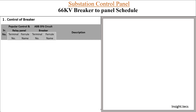Now let's get started preparing the schedule. We will make a simple table where we write the terminal numbers and ferrule names from the drawings of the relay control relay panel. Similarly, we'll write terminal numbers and ferrule names for the circuit breaker. Today we are using the relay panel of a popular make, and for the circuit breaker we will use an SF6 gas circuit breaker of ABB make.